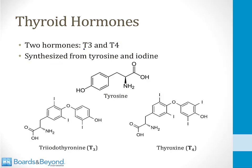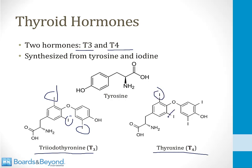There are two thyroid hormones in the human body: T3 and T4. T3, also called triiodothyronine, has three iodine molecules as shown at the bottom left of the screen. T4, also called thyroxine, has four iodine molecules. Both are synthesized from the amino acid tyrosine, whose structure is shown on screen — a benzene ring with a hydroxyl group — and tyrosine molecules are combined with iodine to create T3 and T4.